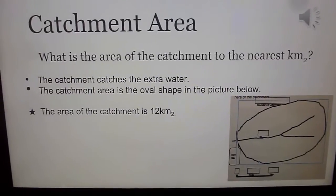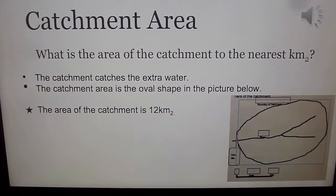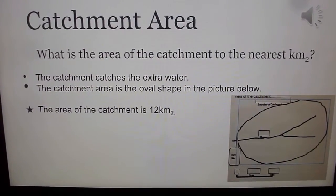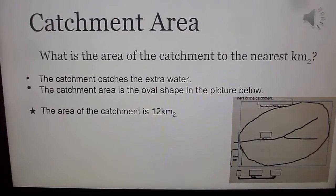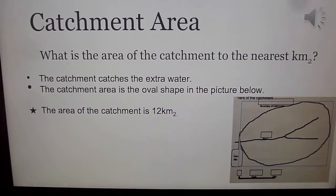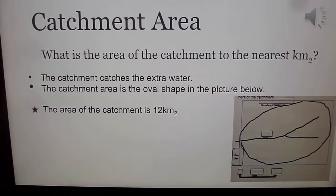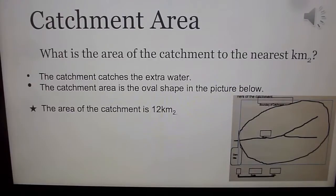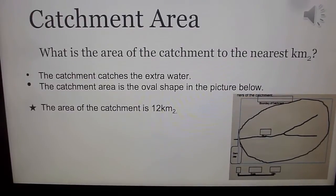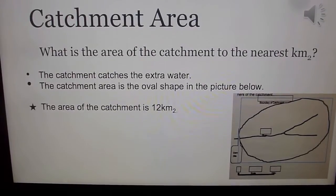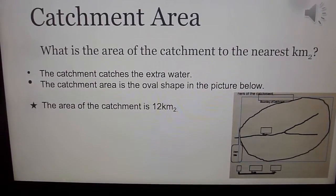The outline of the catchment has been identified from the map. The area of the catchment can be measured by working out a scale. We made up a rectangle to include the entire area of the catchment and then subtracted the four right triangles approximately to find the area.